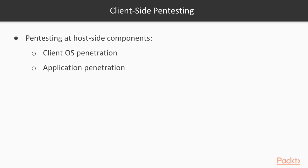That is called application penetration testing. For example, if PHP is working but you are still using an older version of PHP, that is considered client-side pentesting or application pentesting, which is working inside your operating system. So these are the two components of network pentesting.